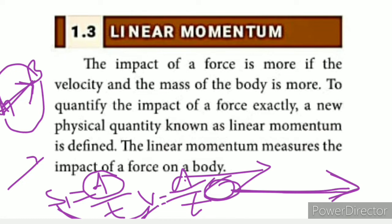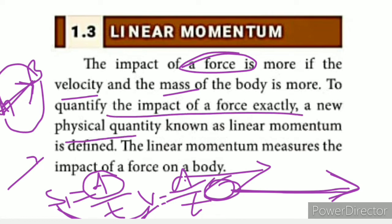Velocity has direction, which is why uniform speed can differ from uniform velocity. Changes in direction, mass, or speed all matter. To quantify the impact of force exactly, a new physical quantity known as linear momentum is introduced. We use the term linear momentum to measure the effect of force.